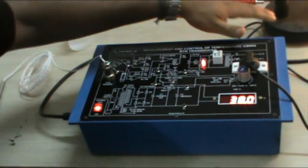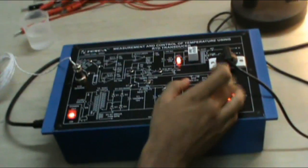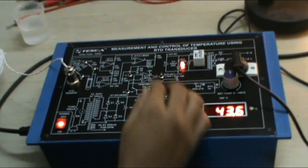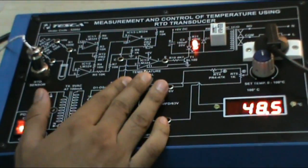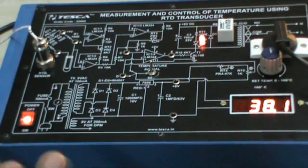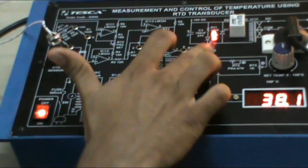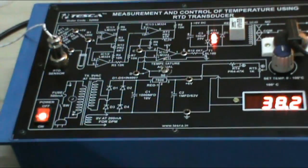Now as we connect this lamp to our socket and set the temperature in this set mode and increase the temperature to approximately above 45 degrees Celsius, the LED will glow and the lamp will also glow.